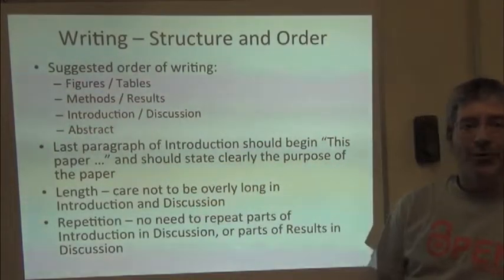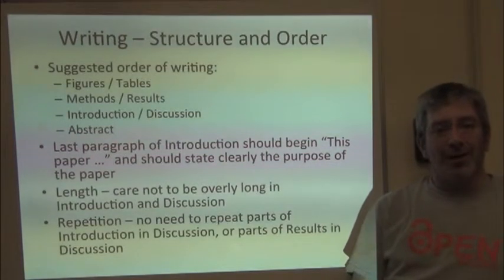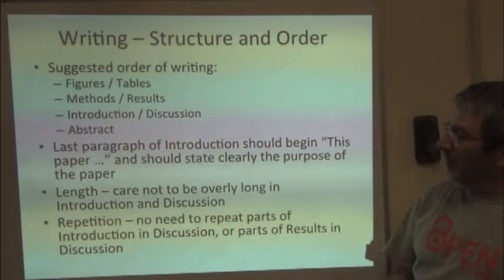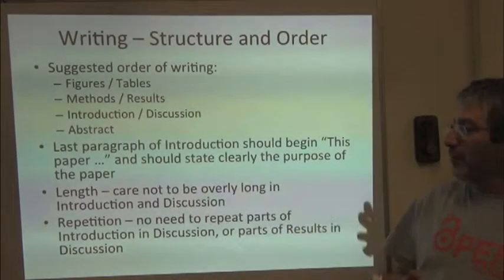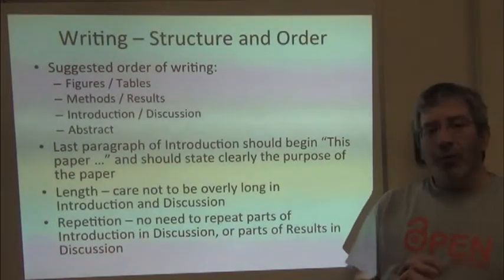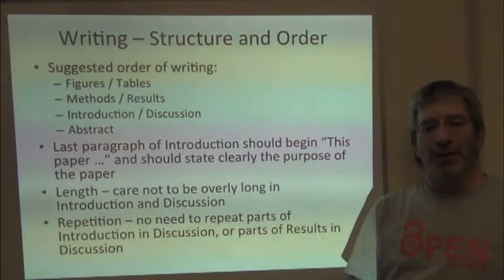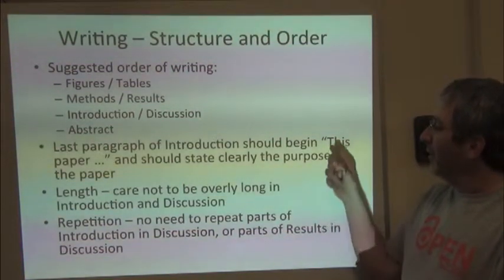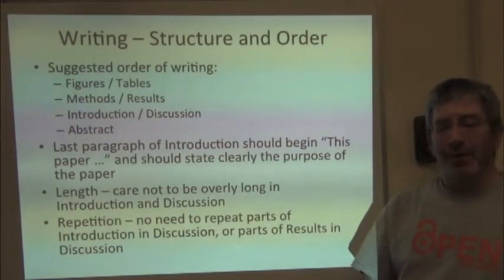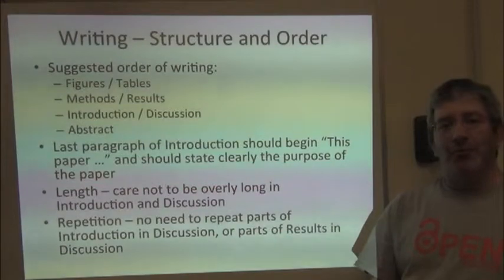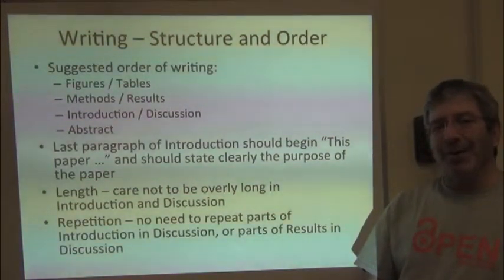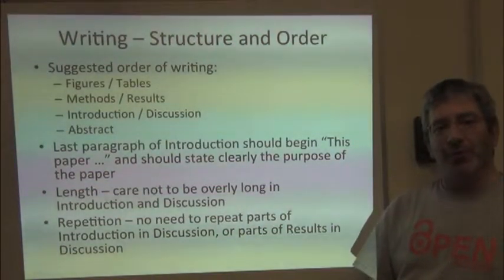Finally, once you've written your whole paper, the abstract is your summary — it's actually easiest to write at the end rather than the beginning of the process, even though it comes first in the paper. A couple other points: at the end of the introduction, your last paragraph needs to state very clearly why this paper needs to be published and what its contribution is to the broader literature. I personally feel the last paragraph of the introduction should begin, 'This paper does the following.' Your introduction gives the rationale of why the reader should care, and that last paragraph lays out exactly what this paper is going to do.